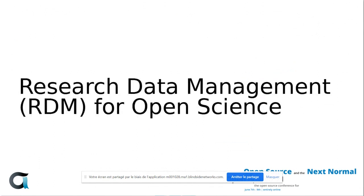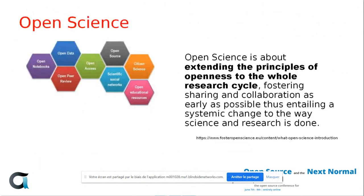First we'll talk about why research data management is important in open science. Open science is a relatively new idea regarding extending the principles of openness to the whole research cycle. The idea is that there would be sharing and collaboration in research as early as possible, allowing a different way to approach research and more collaboration across the world.